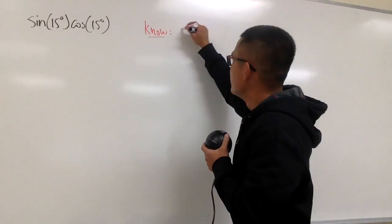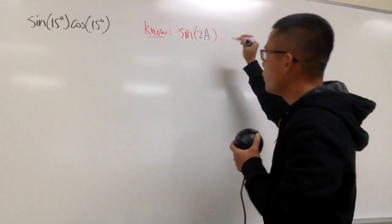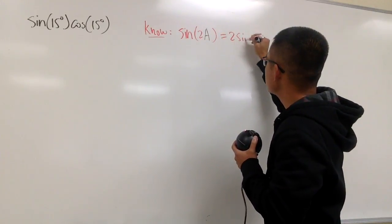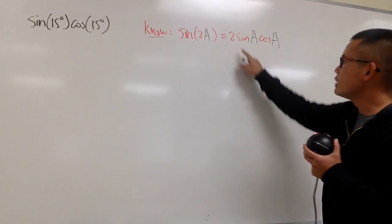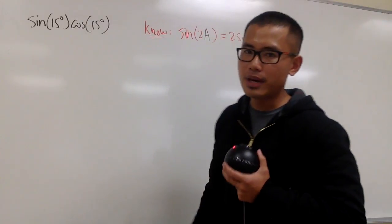Let me write it down. We know sine of 2a, this is the double angle formula for sine. And this is the same as 2 times sine a times cosine a. And you see, we have the sine a cosine a, which is exactly this part.